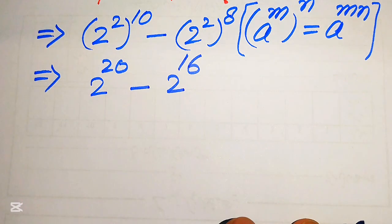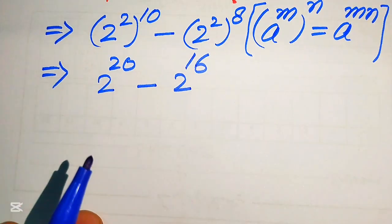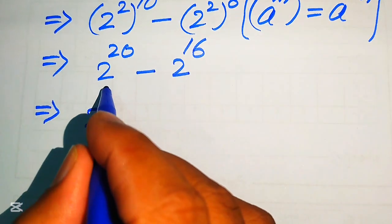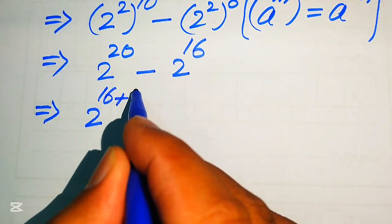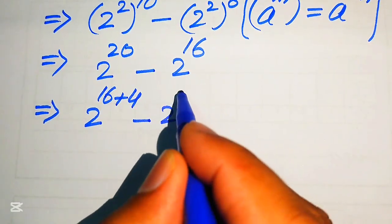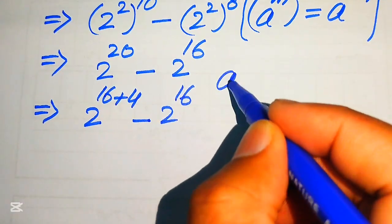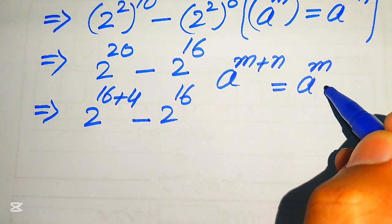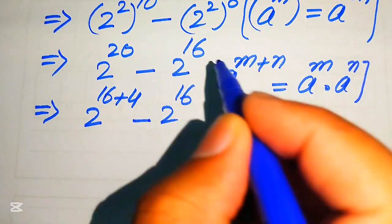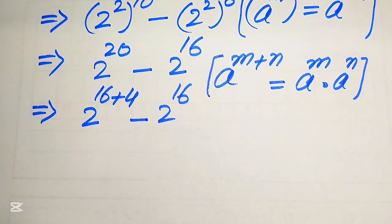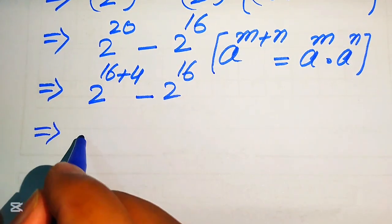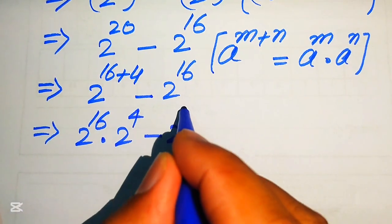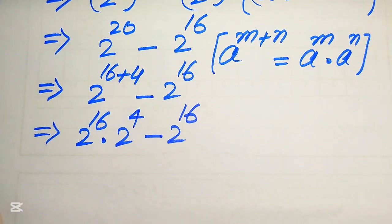Now we simplify these two terms by breaking 2 to the power of 20 as 2 to the power of 16 plus 4. We then apply the exponent law: a to the power of m plus n equals a to the power of m multiplied by a to the power of n. This gives us 2 to the power of 16 multiplied by 2 to the power of 4, minus 2 to the power of 16.